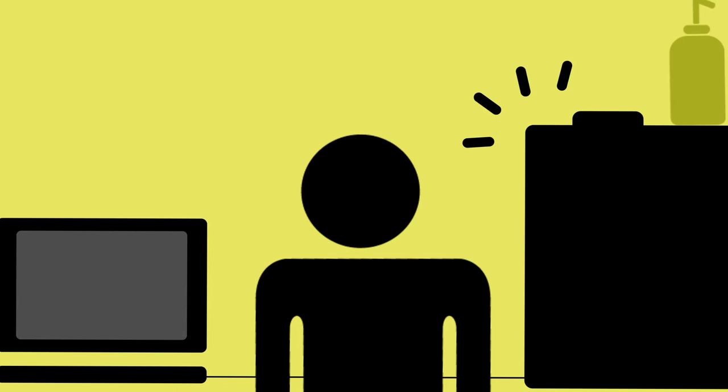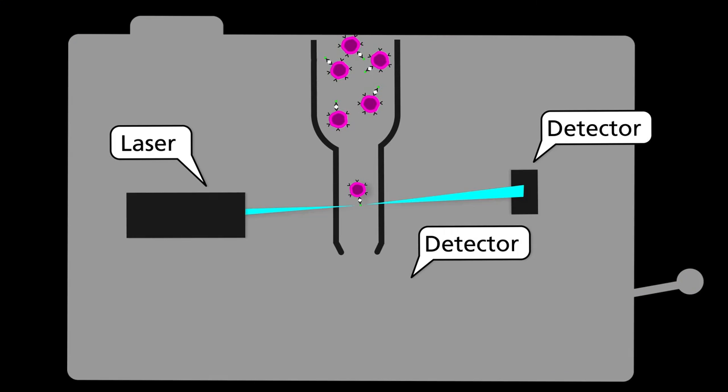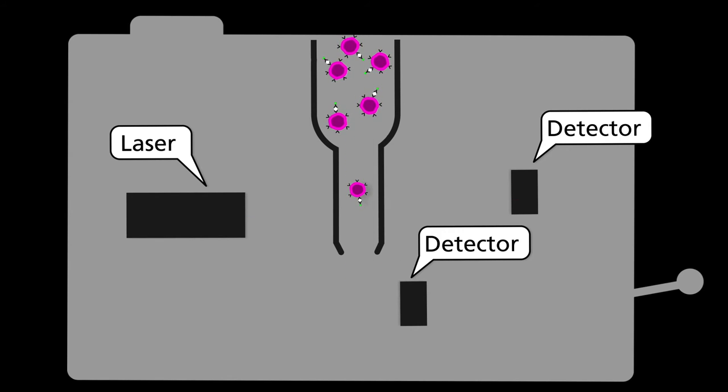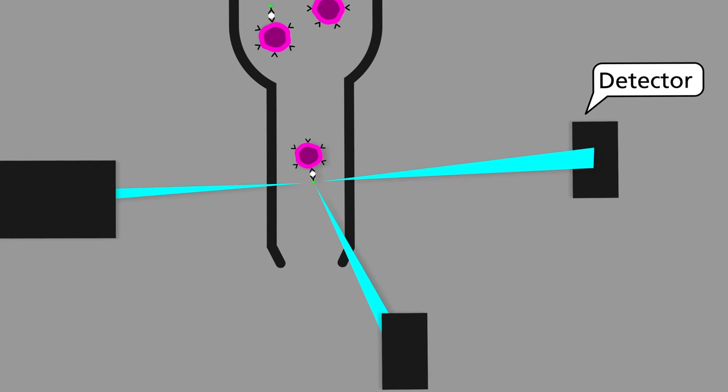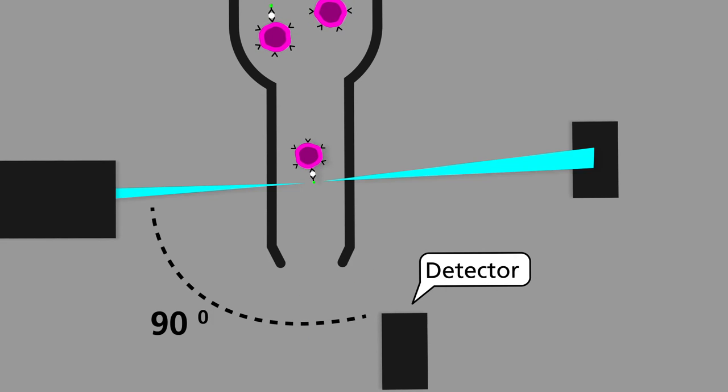The counting process happens when the antibodies pass in front of a laser beam, which scatters reaching two detectors. One right ahead of the beam's original path, and another one 90 degrees transverse to it.